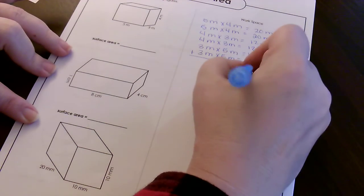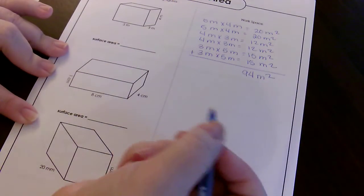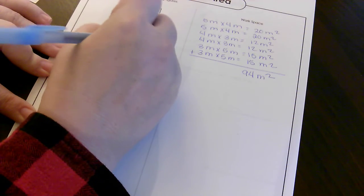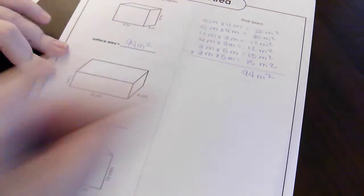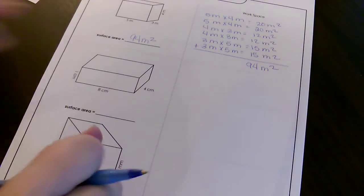And I get 94 meters squared. So this one is 94 meters squared. I'm going to let you guys do the rest of this worksheet on your own.